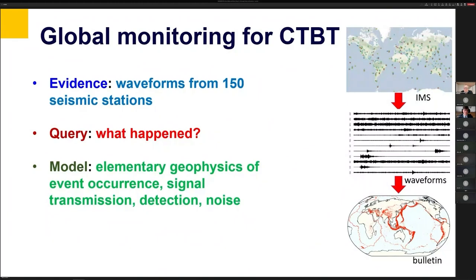And so we can do that as a probabilistic reasoning problem where the evidence is the data collected from the detector stations. The question you want to answer is what happened today? And the probability model can describe both the geophysics of how and where events are likely to occur, how signals are transmitted, whether those are seismic waves of various kinds or acoustic waves in the ocean, how they're transmitted, how they're detected, and then the background noise that exists in the world.